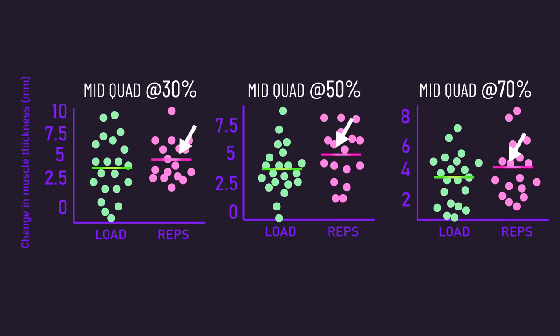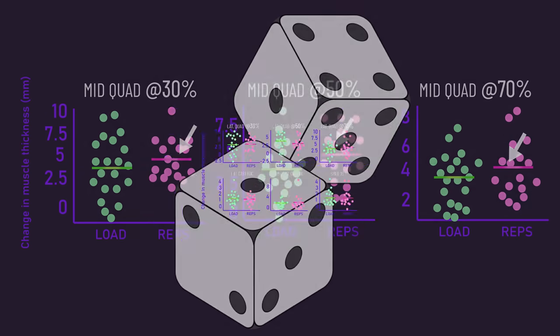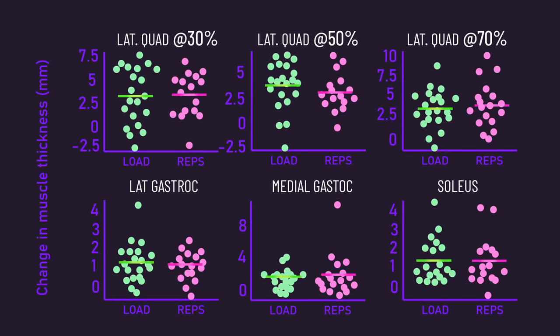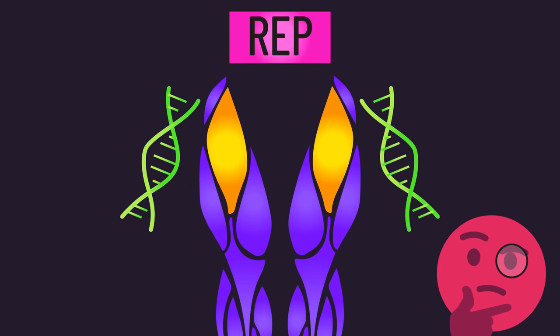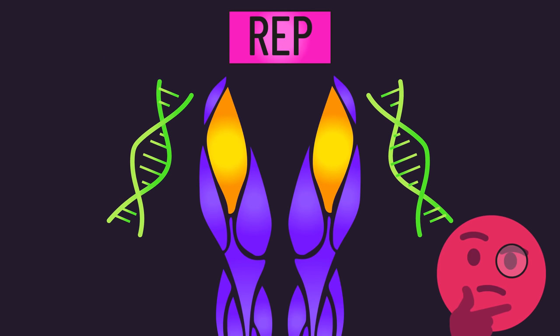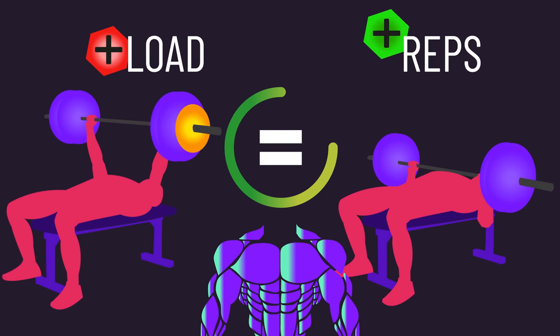Another explanation is the greater mid-quad growth with the rep group was just due to chance, especially given growth of the other muscles were similar between both groups. Somehow, the rep group might just have had better rectus femoris building abilities. In any case, this study still largely suggests muscle growth is similar between load and rep progressions, and this makes a lot of sense.